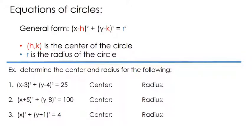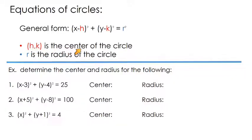In this video, we're going to look at the equations of circles. In other words, how do you write the equation of a circle on the coordinate plane? The general form, often called center-radius form, is x minus h squared plus y minus k squared equals r squared. Here, h comma k is the center of the circle, and r is the radius. If you know the center and the radius, that's all you need to graph a circle.